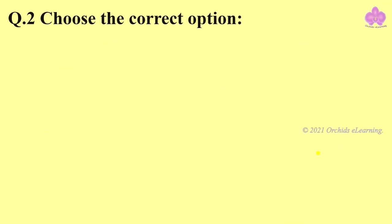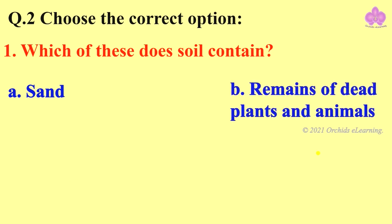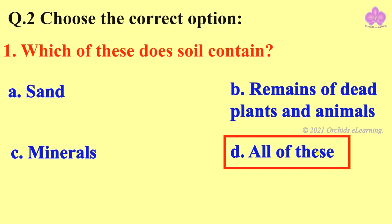Next, choose the correct option. First one: which of these does soil contain? Option A: sand. B: remains of dead plants and animals. C: minerals. And D: all of these. Correct answer: all of these.